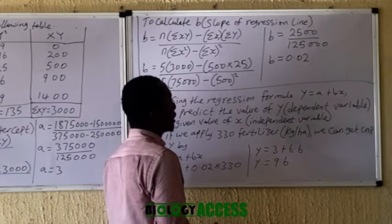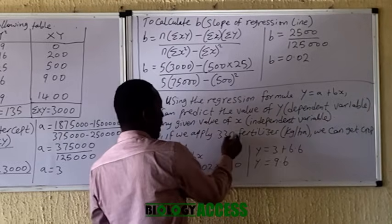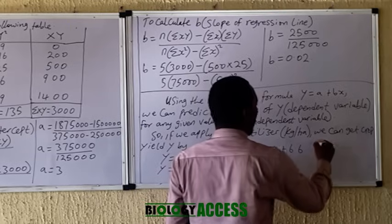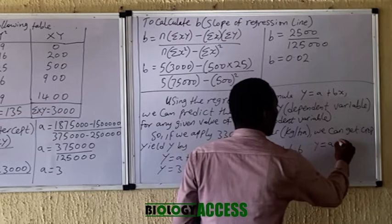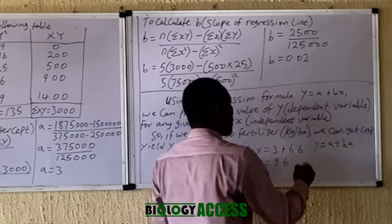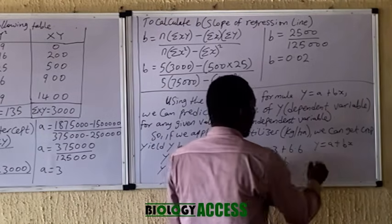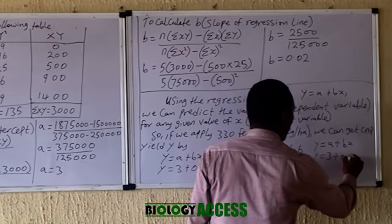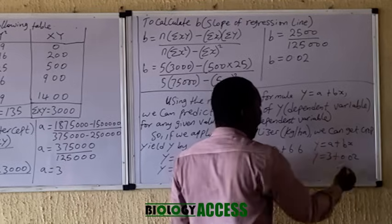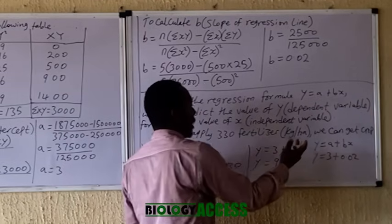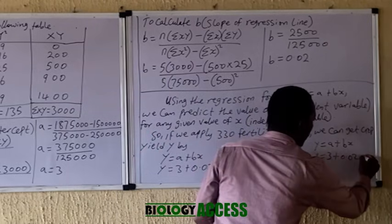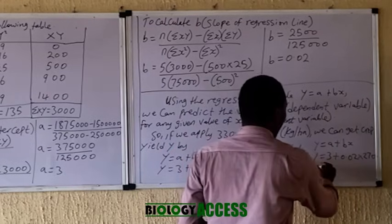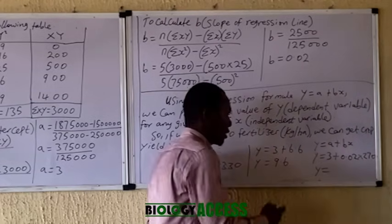You can do the same for any other value. Let's say you apply 270 kg of fertilizer per hectare. The equation remains Y = a + bX. Since A = 3 and B = 0.02, substitute X = 270: Y = 3 + (0.02 × 270). You can carry out this calculation using your calculator and send me the answer.